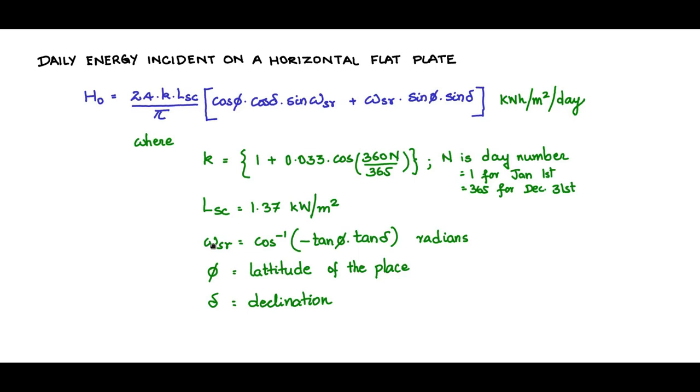ωsr is the sunrise hour angle which we saw just now, and this is given by cos inverse of minus tan φ tan δ, again in terms of latitude and declination only, expressed in radians. φ is the latitude and δ is the declination. Both of these can be in radians or degrees.